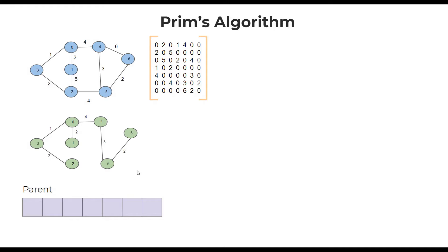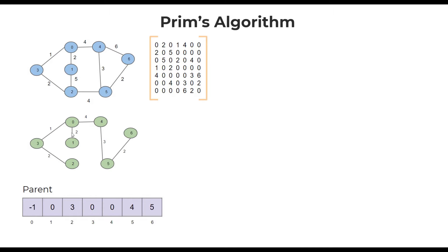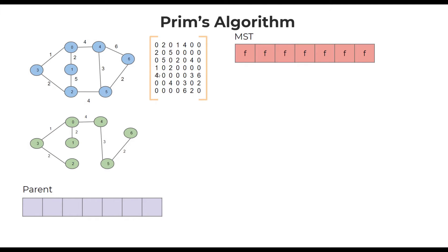In the spanning tree we constructed, if you take vertex 1, then 0 is the parent of 1. Similarly, 0 is the parent of 3 and 0 is the parent of 4. So if we have such information in a parent array and also the adjacency matrix, we can easily reconstruct the spanning tree. We also need a boolean array to tell us which vertices have already been added to the spanning tree and which are yet to be added, initialized as all false in the beginning. We can pick the 0th vertex first, mark it as true in the boolean array. The starting vertex cannot have a parent, so we assume the parent of the starting vertex is minus 1.